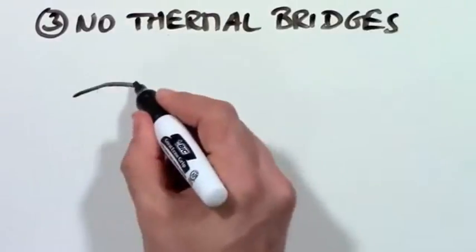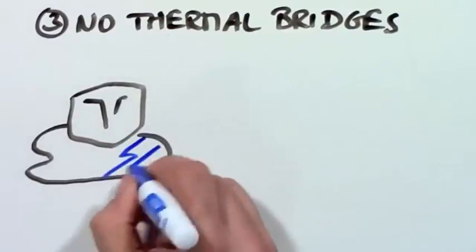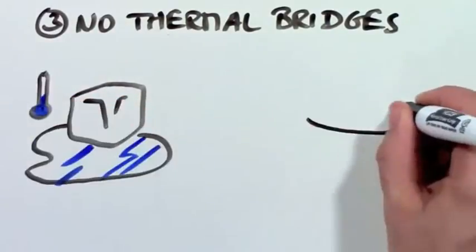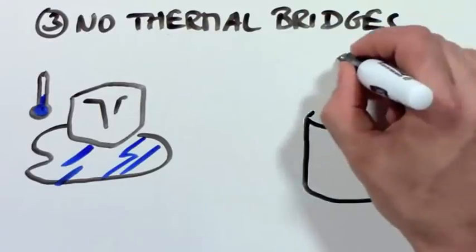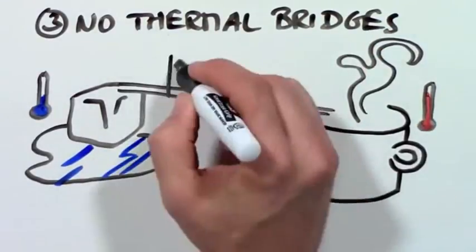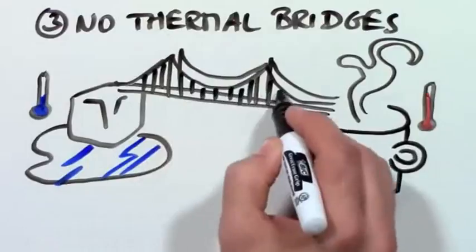3. No thermal bridges. A thermal bridge is like a road for heating energy in which warmth can travel right through your walls. As a matter of fact, most of our houses have thermal highways in our walls where heat can easily travel to the outside.